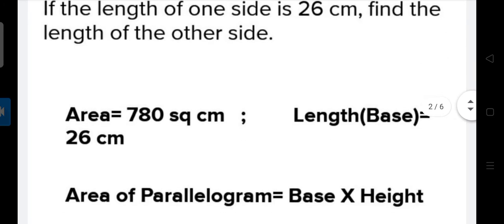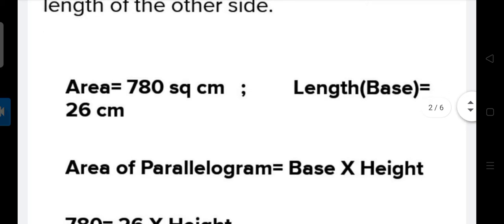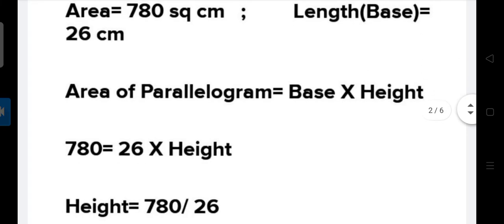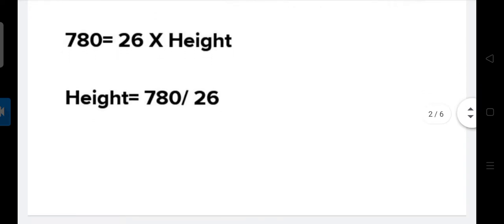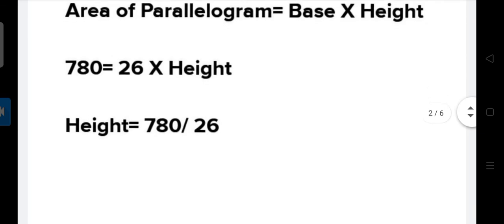First, we need to know the formula: the area of a parallelogram is base into height. So we put up the formula and values. It becomes 780 equal to 26 multiplied by height. Since base is given but height is not, we solve: height equals 780 upon 26, which gives us 30. So the height of the parallelogram is 30 centimeters.